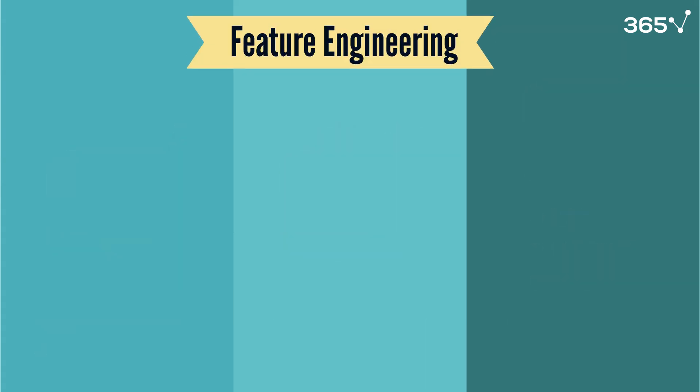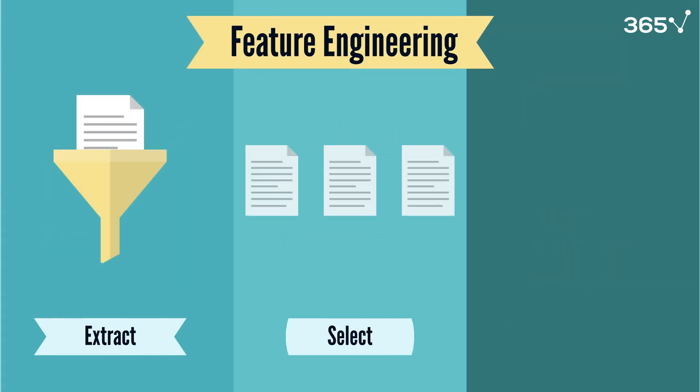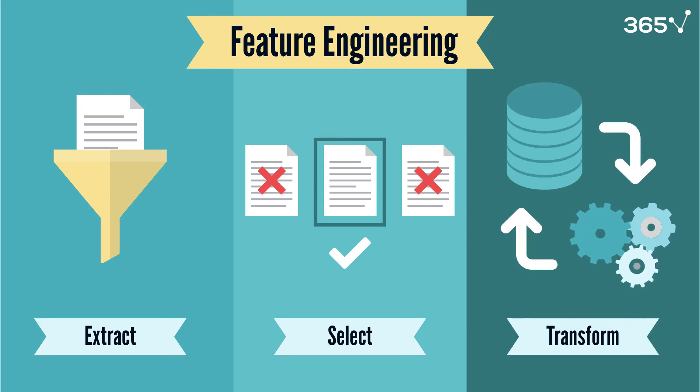Next, think about feature engineering. Learn how to extract, select, and transform features to improve model performance. Now, take a look at bias-variance trade-off.